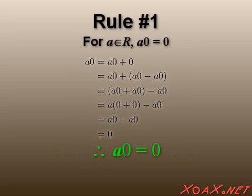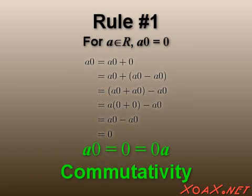This proves that a times zero is zero, and commutativity tells us that the product is true in the other direction, too.